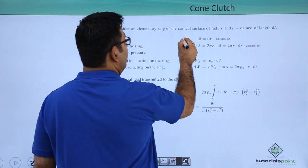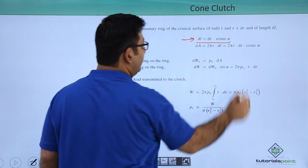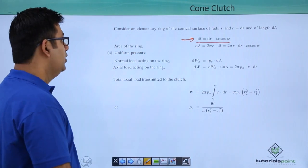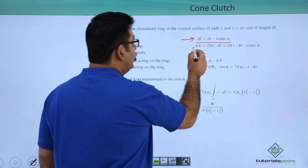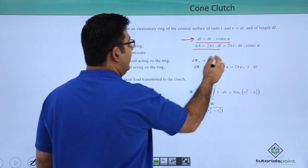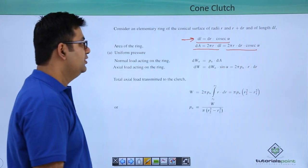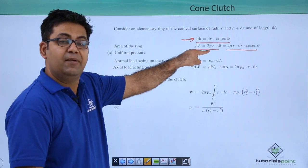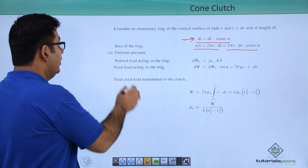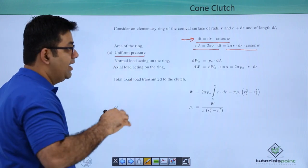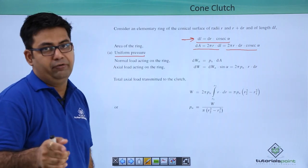As I told you, dr by dl is sin alpha, so the value of dl in terms of dr is dr cosecant alpha. So area of the ring would become 2 pi r into dl, where dl equals dr cosecant alpha. We are talking here about uniform pressure.